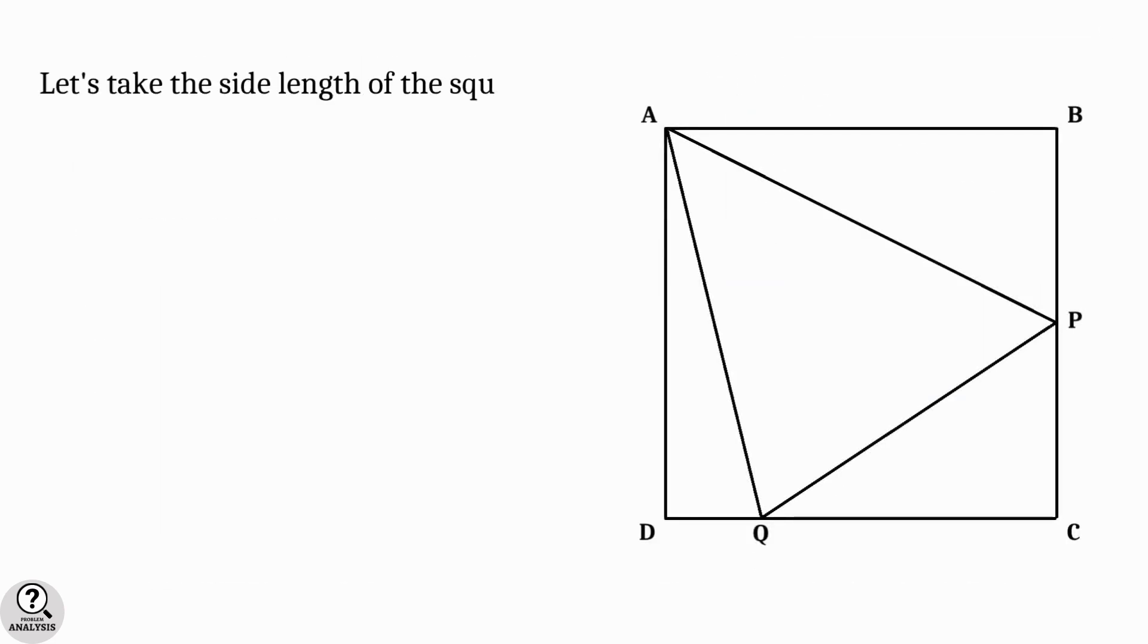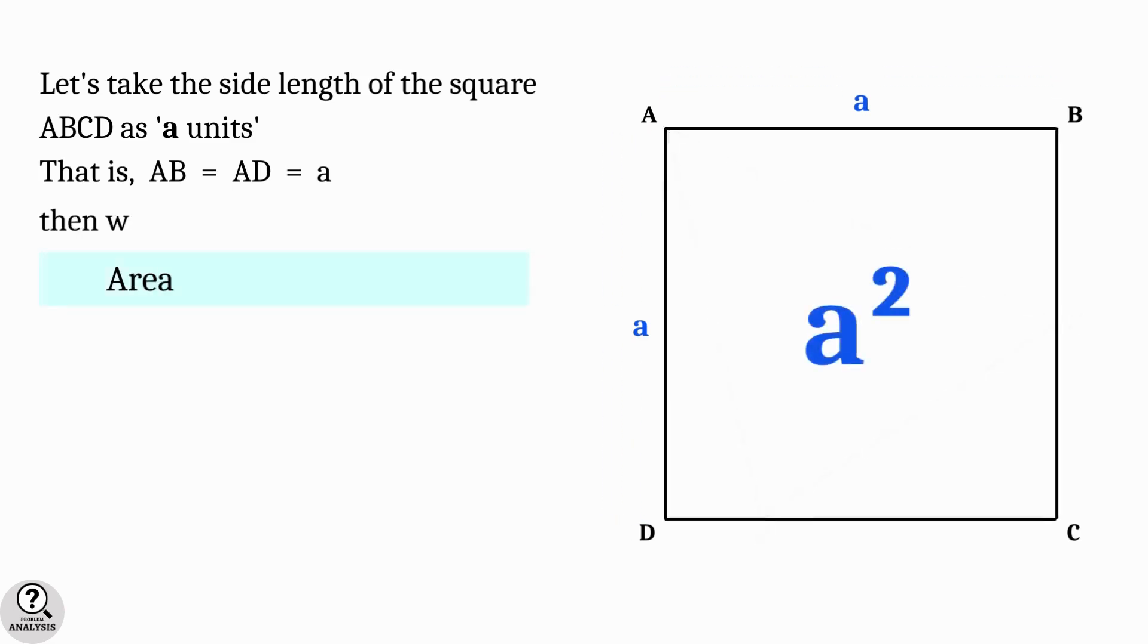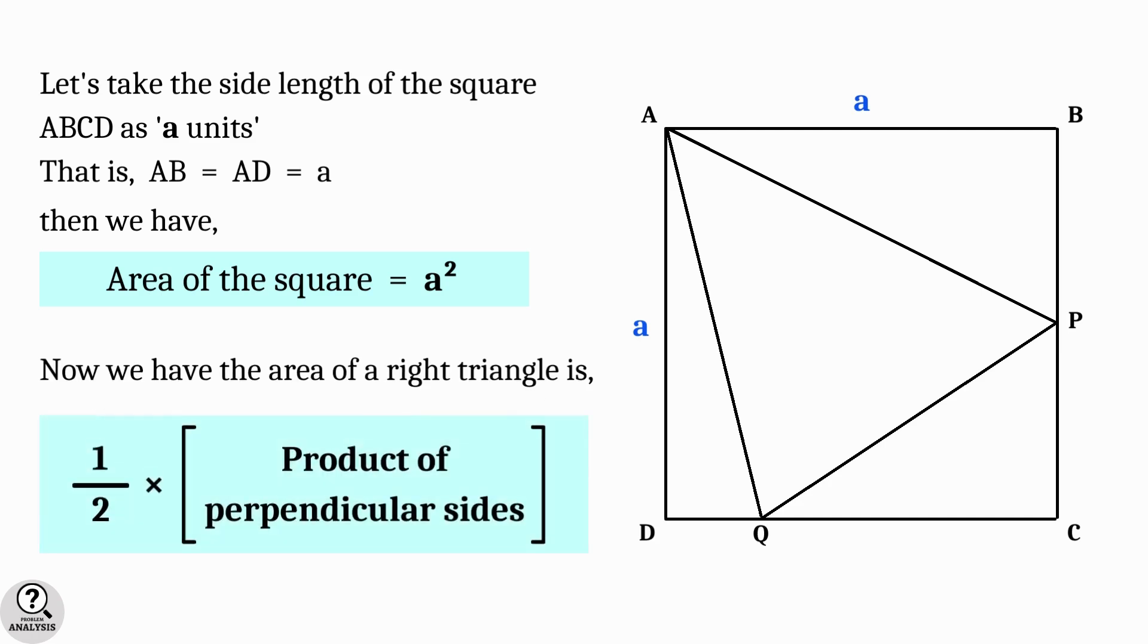I am taking the side length of the square as a units, which means AB and AD are equal to a. Then as we know the area of a square is a². Next, what is the formula for finding the area of a right triangle? It is nothing but half into product of perpendicular sides.